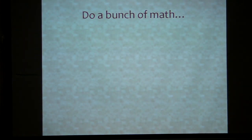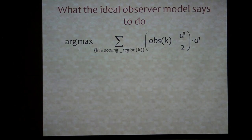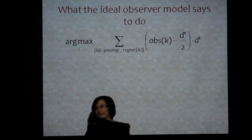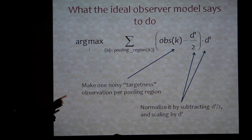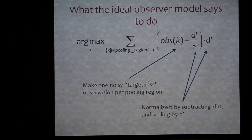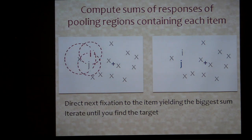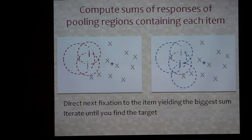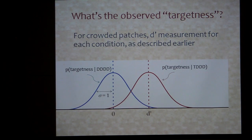You do this — it involves a lot of math to figure out what the ideal observer says. A Monte Carlo simulation tries to mimic the human by making a noisy observation from each pooling region, normalizing it by subtracting a d-prime offset and scaling by d-prime — this is the measure of discriminability I've been talking about throughout. If you're trying to decide between location I or J for your next fixation, you look at all the pooling regions that overlap each location, sum up the normalized observations, and whichever place has the highest sum is where you go next. You run this many times, and try to predict mean number of fixations.